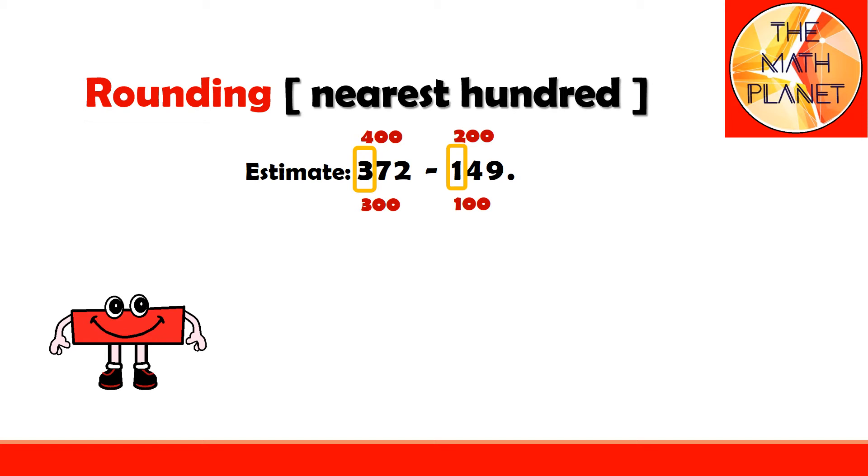Now, 372 is closer to 400, so I will estimate it to be 400, while 149 is closer to 100, so I will round it down to 100. And the estimate difference will be 400 minus 100 equals 300.